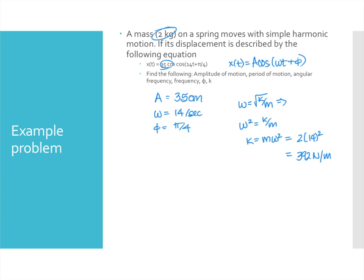From omega again I could get the frequency, the regular frequency. That's the number of oscillations per second, we usually express the frequency in hertz which is just one over a second. And then the period is the inverse of this which would be 0.45 seconds. I think that's all that they asked for. We found the amplitude, the period, the angular frequency, the frequency, phi, and k, so we did it.